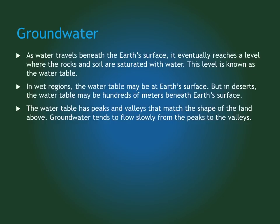As water travels below the surface into the ground, it reaches a level where the ground is saturated, or completely full of water. This level is known as the water table — it's the level underground where the rocks are already full of water. When it's been raining for a long time, or in early spring when snow melts, the water table could be very high, maybe even at Earth's surface. In very dry areas like deserts, the water table may be hundreds of meters below Earth's surface.